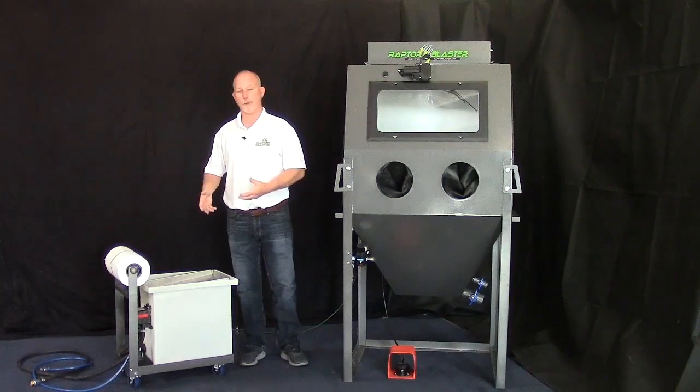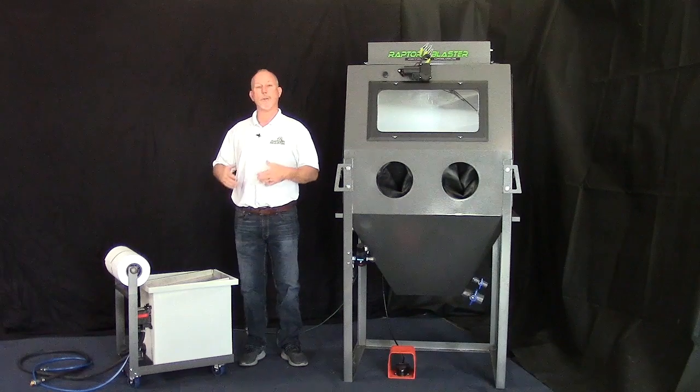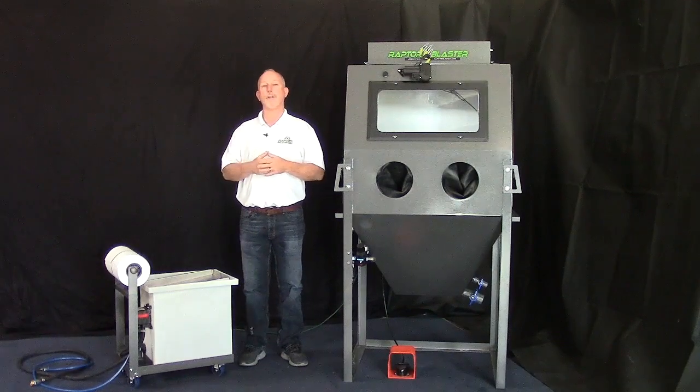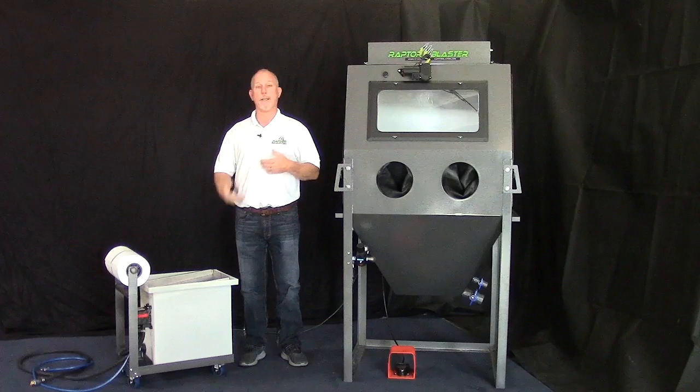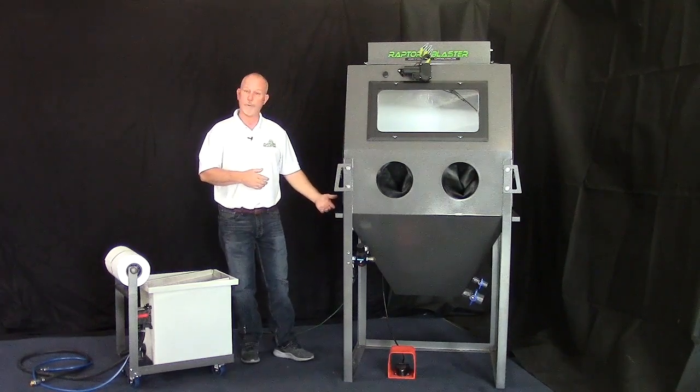The way the closed loop system works is it has a pneumatic driven pump on it, you fill the tank with water. When you pull the trigger on the rinse nozzle, you're going to draw water from the tank into the cabinet.